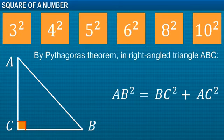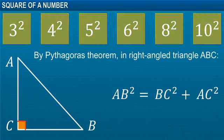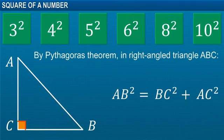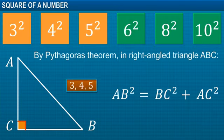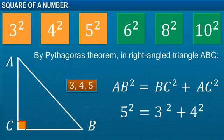Now, what are the numbers that would satisfy this condition? One such set of numbers is 3, 4 and 5. Since 5 square is equal to the sum of 3 square and 4 square.